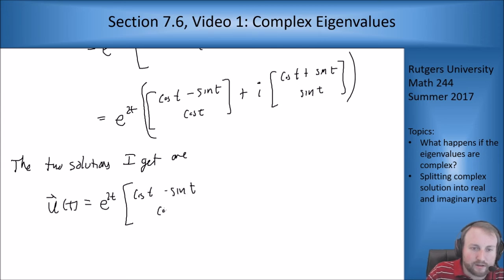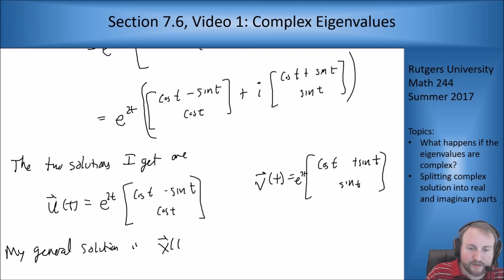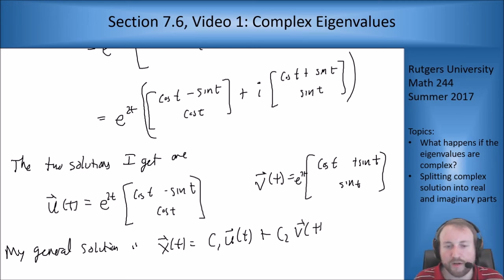and v of t equals e to the 2t times (cosine t plus sine t, sine t). And then my general solution is x of t equals c1 u of t plus c2 v of t, where the u and the v are the ones right above there.